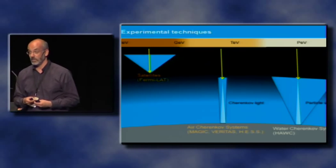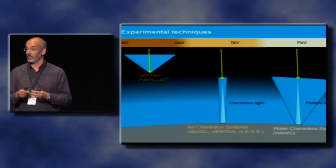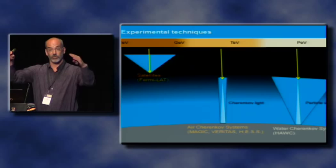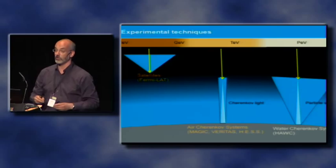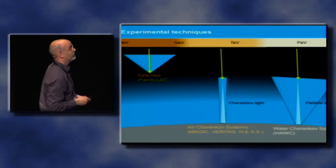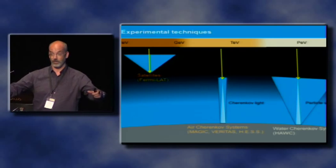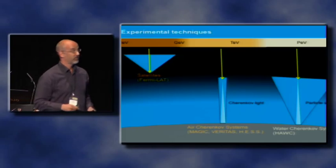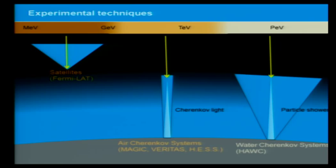Of course, you have to convince a funding agency to give you money to build a satellite. With a satellite you can directly detect photons — these are basically particle physics detectors: a veto shield, a tracking detector, a calorimeter. If you convince your funding agency, it gives you a billion dollars, and then you can fly a satellite with a collection area of one square meter — not more. Given the steep decrease of fluxes, this allows the Fermi-LAT, which is now in space, to go up to GeV energies. From then on, you cannot do this in space anymore and have to go to the ground.